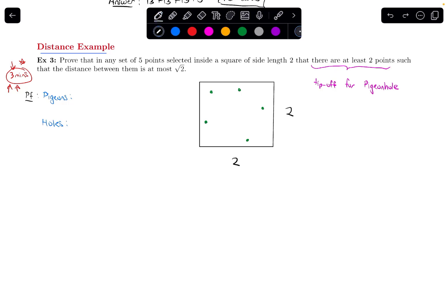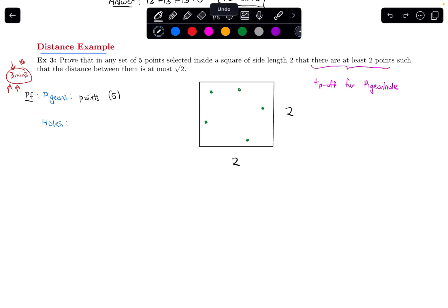For this problem, we are going to be picking these 5 points — those are going to be the pigeons, and I know that there are 5 of them. The challenging part is figuring out what the holes are. Ideally, I want fewer holes than pigeons, because by the pigeonhole principle that would mean there's got to be at least 2 points in 1 hole — that's what I'm trying to show, that there's at least 2 points with some property.